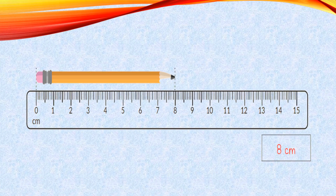Nowadays we use a ruler or metric scale and measuring tape to measure the accurate length and height of an object. I'm going to make it more clear how we are going to use a scale to measure an object.